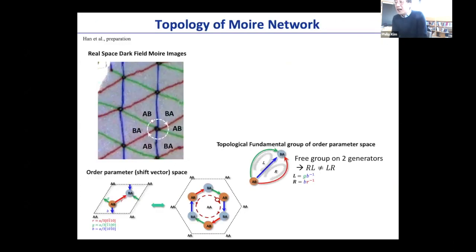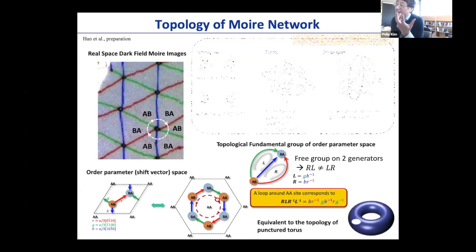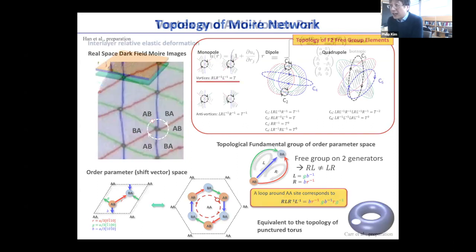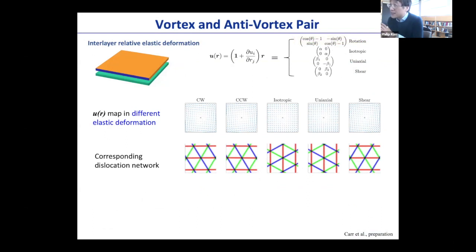Let me skip through because of time. There are really well-developed mathematical tools to analyze this type of 2D moiré network in terms of dislocation network topology. In that picture, all the AA sites are interpreted as a kind of vortex site. Moreover, not only twisting, but there's a way to create this type of general moiré lattice further — you can create vortex and anti-vortex arrays by twisting or shearing, and then isotropic or uniaxial expansions. All of this creates different types of moiré patterns — or equivalently, networks of dislocations of different kinds. They tend to show very different structural properties and potentially very different electronic properties associated with that.